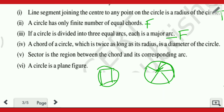Question number four: a chord of a circle which is twice as long as its radius is a diameter of the circle — TRUE. Yeh keh raha hai chord of circle which is twice as long as its radius. Ek circle hai aur ek circle ka chord hai, aur woh chord radius ke just double hai. Agar radius ka double hai to woh diameter ban jaayega — radius ka double hi diameter hota hai. So this is TRUE.